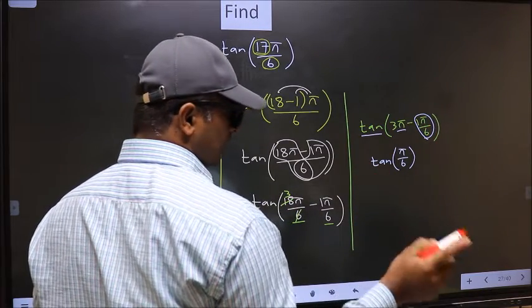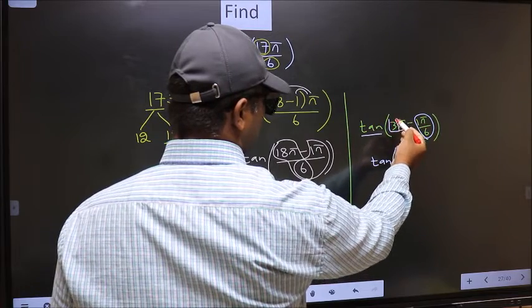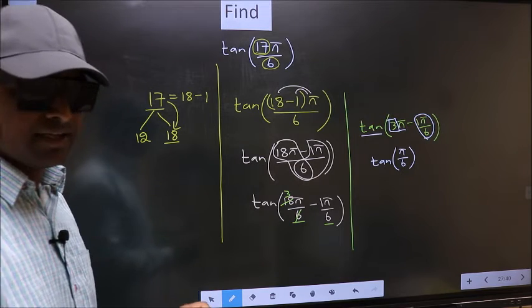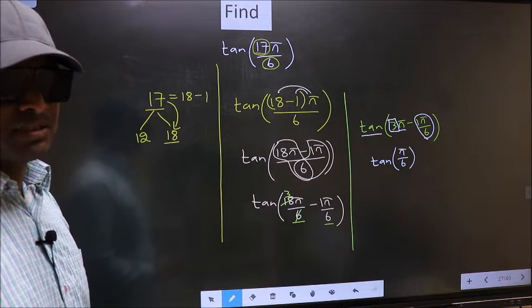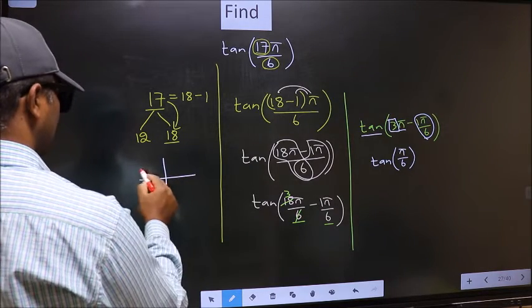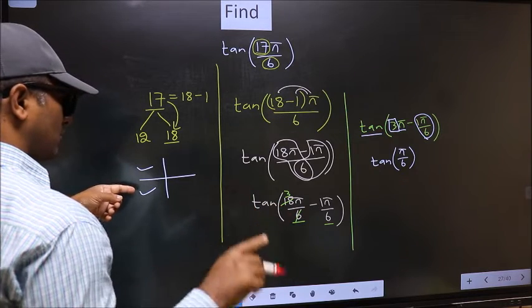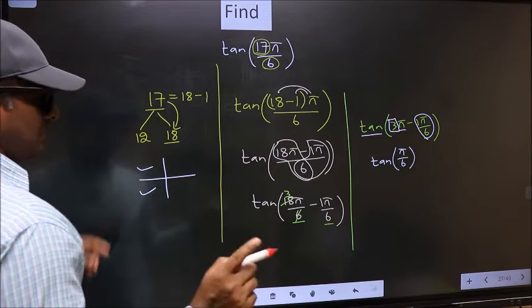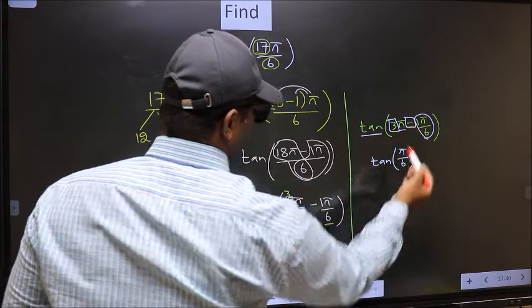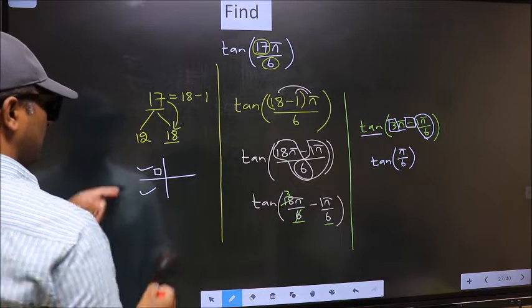To answer that, you should look at the number before π, which is 3. And 3 is odd. And all the odd multiples of π, they lie either in the second or in the third quadrant. So now to select the quadrant, we should look at this symbol. Here we have negative, that means the angle lies in the second quadrant.